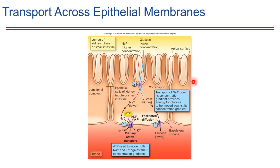The microvilli you see here are very good surfaces for transport to happen over. Something special also exists in these cells — between adjacent cells there's a special connection called a junctional complex.